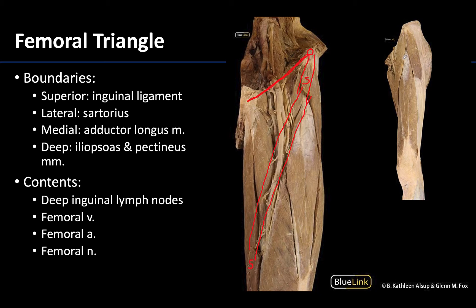You can see the uncut sartorius on this image here. When you're dissecting this area, the sartorius is generally one of the first things you see because it's the most superficial muscle here.